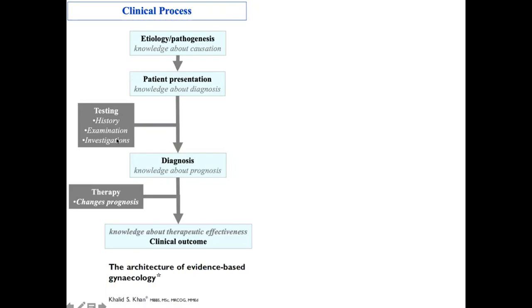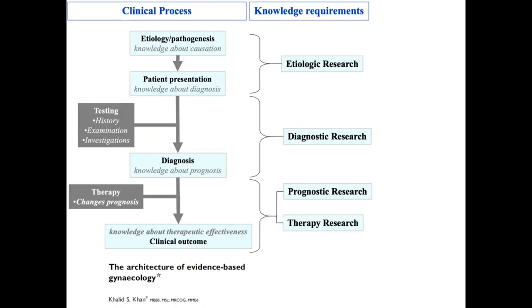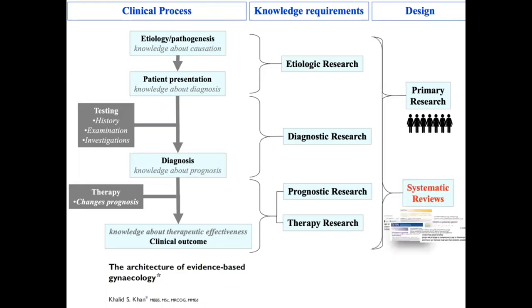The clinical outcome of the patient. The etiologic research addresses the initial part of this flow diagram, then diagnostic research, then prognostic and therapy research. And all of this can be carried out as primary study by collecting data directly from patients or by collecting data from published studies which are put together into systematic reviews. So this in a nutshell is the process of framing questions.